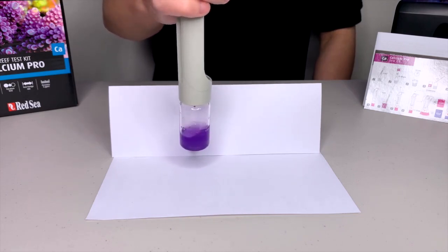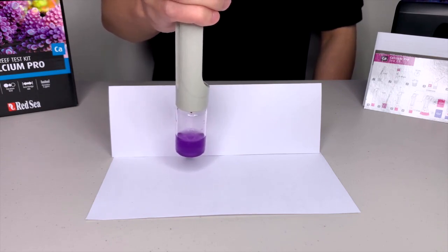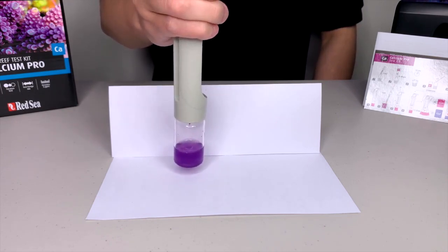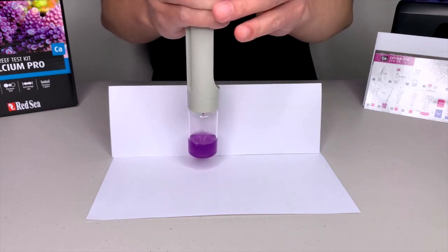Now we can see the water sample is turning into a deeper purple color, which means we are close to the end point. But what we are looking for is a blue color. So we continue adding the titrant into the vial.